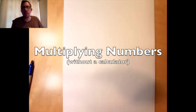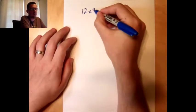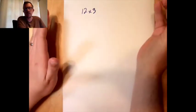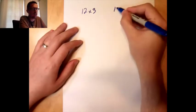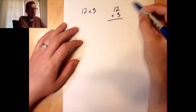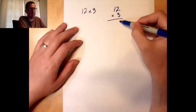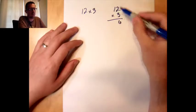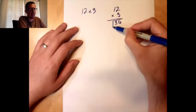When you multiply two numbers together, we normally multiply them by stacking them one on top of the other. So you do 12 on the top and 3 on the bottom. You do 3 times 2, which is 6, and you do 3 times 1, which is 3, and you get 36.